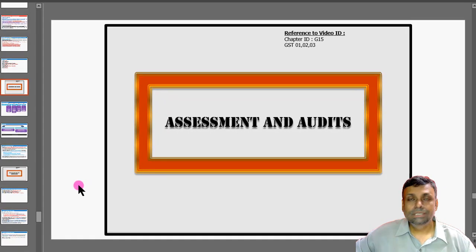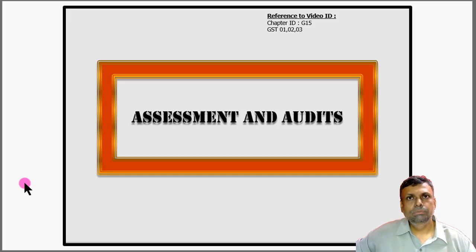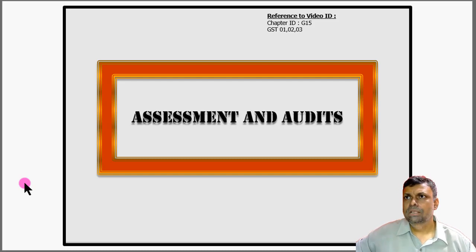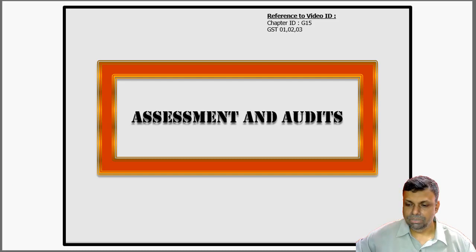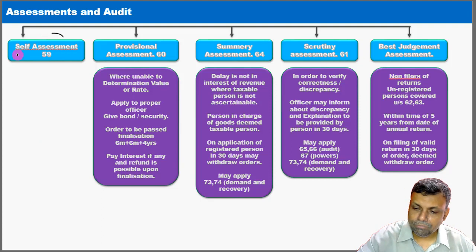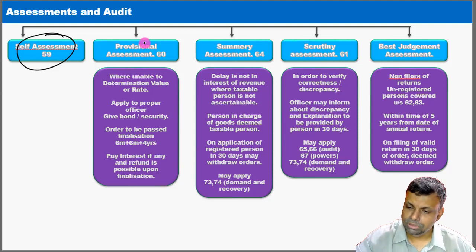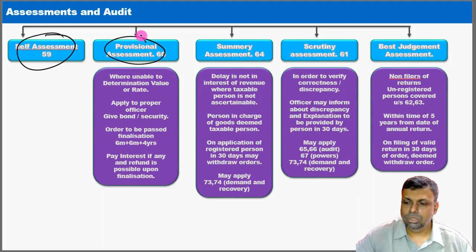The provisions relating to assessments and audits: the general approach under GST is self-assessment — a trust-based system. However, special assessments occur in special circumstances. By default, the taxpayer must do self-assessment, self-payment of tax, and submit a valid return. Special assessments come into picture only when certain situations arise. The provisional assessment comes into picture only where the taxpayer is unable to determine the value or classification.